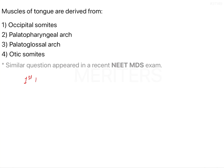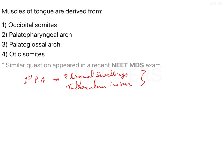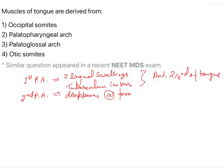The first pharyngeal arch contains two lingual swellings and the tuberculum impar, which together form the anterior two-thirds of the tongue. The second pharyngeal arch has almost minimal contribution, and it disappears at the foramen cecum.